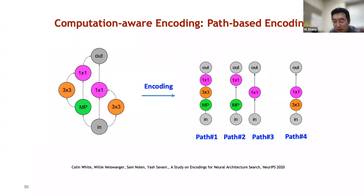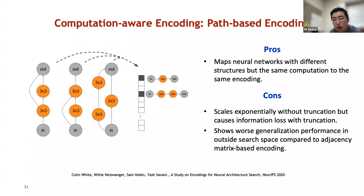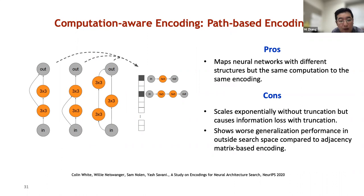As one computation-aware encoding approach, path-based encoding assigns a binary feature to each possible path from input to output node. However, although path-based encoding can map networks with different structures but same computation to the same encoding, it scales exponentially because it must enumerate all possible paths, and truncation leads to information loss. Moreover, path-based encoding shows worse generalization performance outside the training search space compared to adjacency matrix-based encoding, because it cannot generalize to unseen paths not included in the training search space.